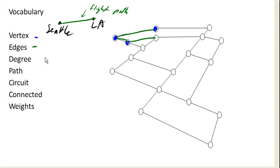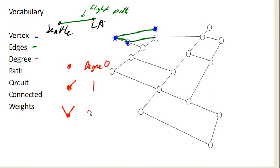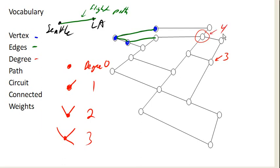Degree of a vertex talks about how many edges meet at the vertex. So if I have a vertex all by itself, this would be degree zero. If I have one edge coming out of that vertex, it would be degree one. If I have two edges coming out, it's degree two. If I have three edges meeting at a vertex, it's degree three. So what's the degree of this vertex? There are one, two, three edges meeting at that vertex, so it's degree three. How about this one? There are one, two, three, four edges meeting at that vertex, so it's degree four. This one is degree two.